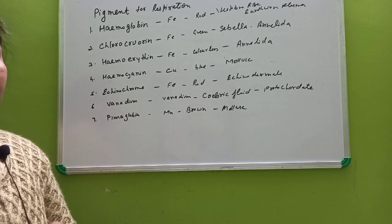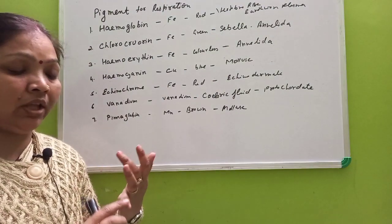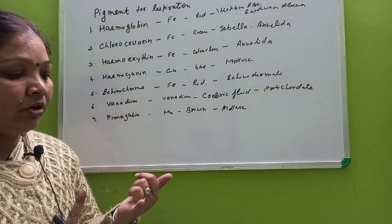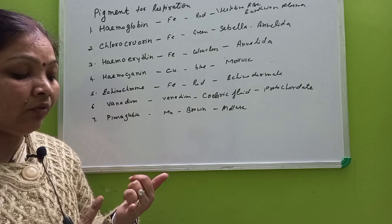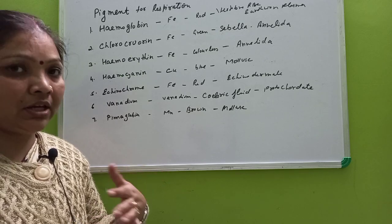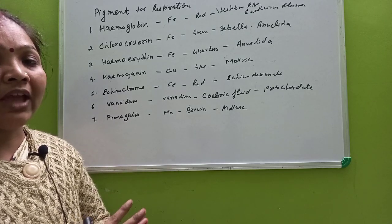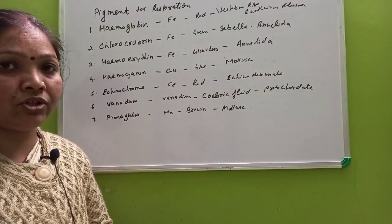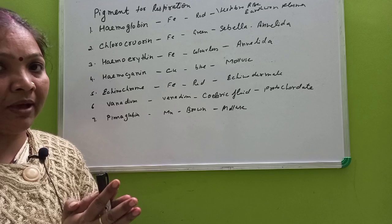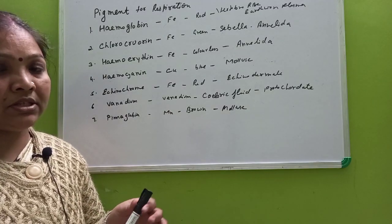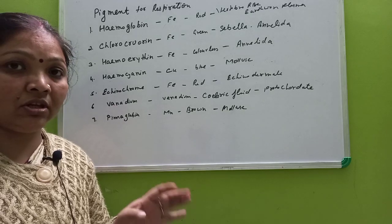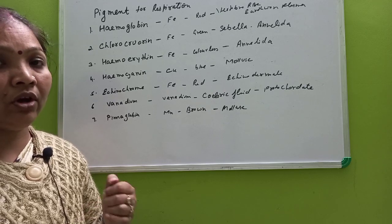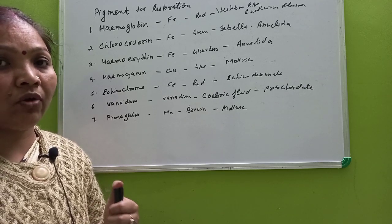In this chapter, we do not have to study cutaneous respiration, branchial respiration, or tracheal respiration in detail. Since we are studying human physiology, we are only dealing with pulmonary respiration and the organs and substances involved in the process of respiration in humans. In the next video, we will study the detailed structure of the organs and the pathway followed in the process of respiration.